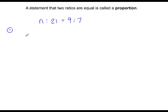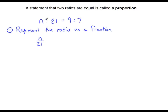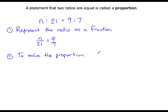Our first step is to represent the ratios as fractions. Remembering that the first number or variable is the numerator and the second is the denominator, so n to 21 becomes n over 21, and is still equal to 9 to 7 becomes 9 over 7. Once we've done that, in order to solve the proportion, we're going to cross multiply.